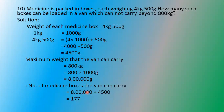We carry down one more zero from 8 lakh; it becomes 35000. In 35000, 4500 goes 7 times. 4500 × 7 = 31500. On subtraction we get 3500. One more zero remains in the dividend, so bring it down — it becomes 35000 again. 4500 goes 7 times, giving 31500. On subtraction the remainder is 3500. We only need the quotient here since the question asks for complete boxes only. The quotient is 177.